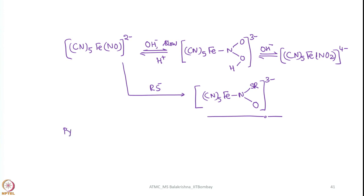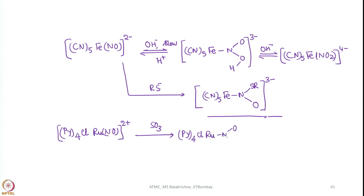Let us consider one more reaction — treat this one with SO₃. The reaction of nitroprusside with sulfite to form nitrosyl sulfito is the first example of a coordinated NO, reported by Bodecker in 1861. And of course, this has a very long N–S bond. The N–S bond distance is around 1.82 Angstrom units.